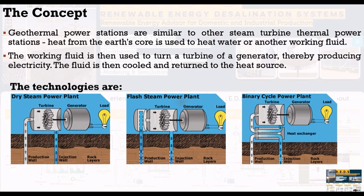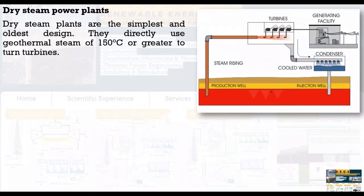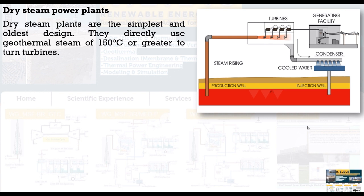For geothermal dry steam plants, they are the simplest and oldest in design. They directly use geothermal steam at no more than 150 degrees Celsius or greater to turn the turbine units. As you can see in the schematic, it is direct vapor from the geothermal well to the turbine unit.